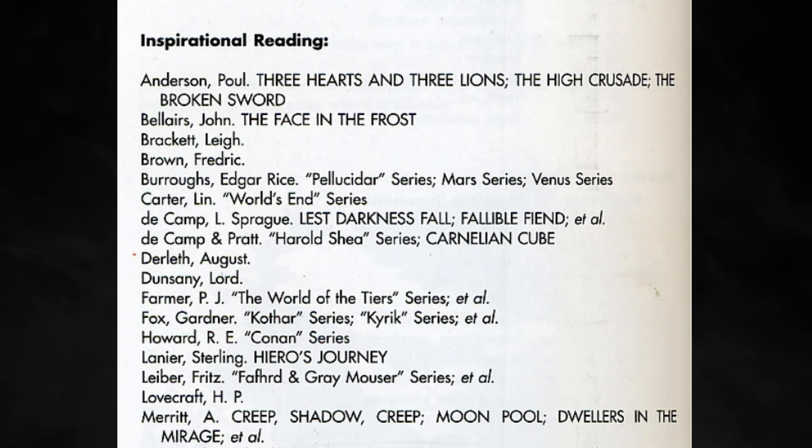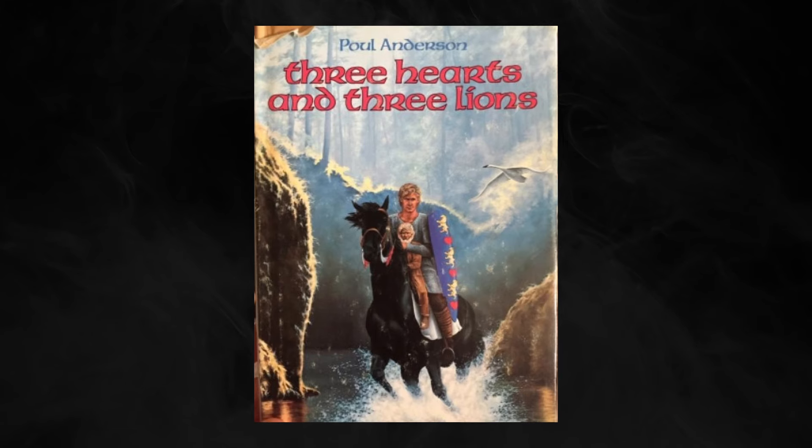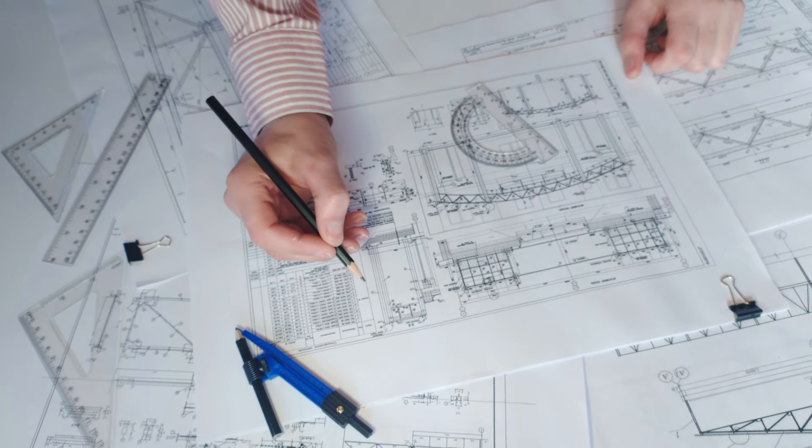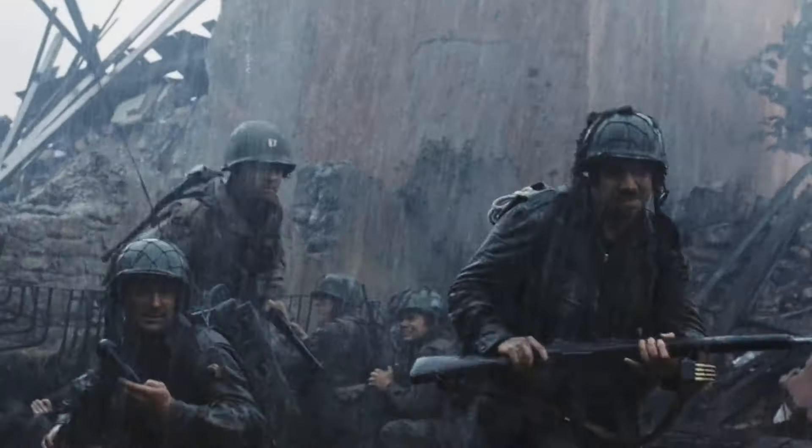Appendix N is a list of inspirational and educational reading material that helped Gary Gygax formulate the ideas codified in Dungeons and Dragons. It's within that list — in fact, the very beginning of that list — where we find the original tale of alignment. The first entry is Anderson, Paul Anderson. Three Hearts and Three Lions is the origin story of D&D's alignment. The book follows a Danish engineer named Holger Carlson during World War II, who gets shot and is transported to a parallel universe where the world is divided between law and chaos.